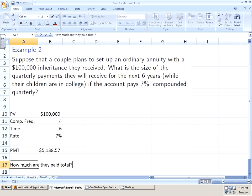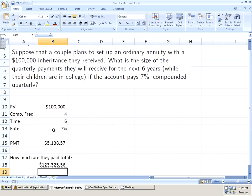How much are they paid total? Well, they get $5,138.57 each quarter, so four times a year for six years. So I do the product of the payment times the number of times the payment occurs annually times the number of years.